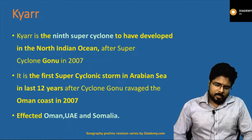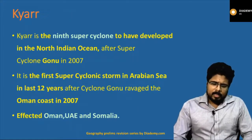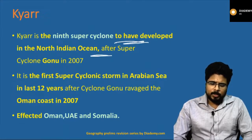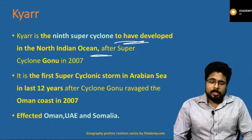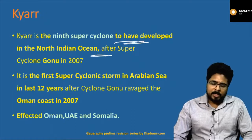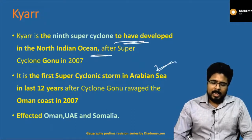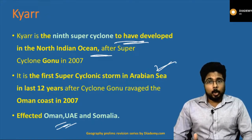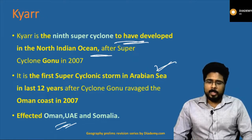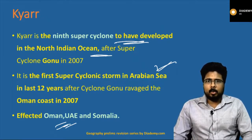Cyclone Kyar is the ninth super cyclone to have developed in the North Indian Ocean after super cyclone GONU. Kyar is in the Arabian Sea. It affected Oman, UAE, and Somalia. A super cyclone is defined as a cyclone with winds greater than 200 km per hour.